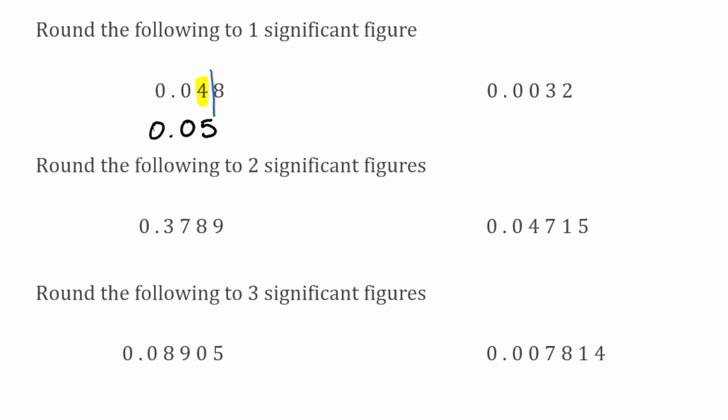For this next example, rounding to one significant figure, the first significant figure in this number would be the three. We draw our line and look at the digit to the right of the line — because it's a two that means we're going to keep the three as a three. We copy our digits underneath: 0.00, and the three remains as a three. So that'd be our answer to that one.